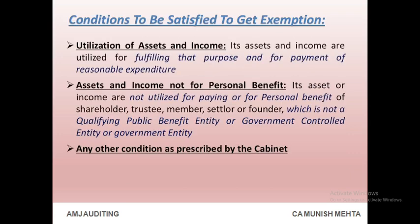Further conditions: utilization of assets and income — its assets and income are utilized for fulfilling that purpose and for payment of reasonable expenditure. Assets and income not for personal benefit — its assets or income are not utilized for paying or for the personal benefit of any shareholder, trustee, member, settler, or founder which is not a qualifying public benefit entity, government controlled entity, or government entity. Any other condition as prescribed by the cabinet.